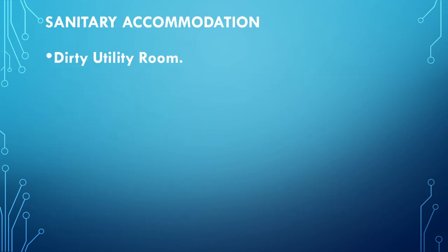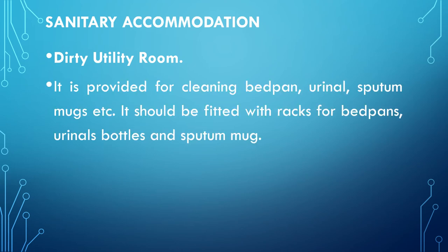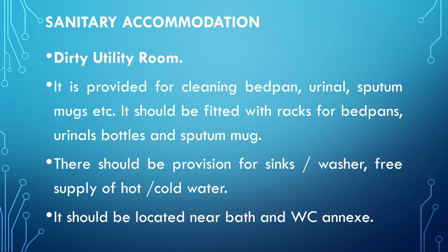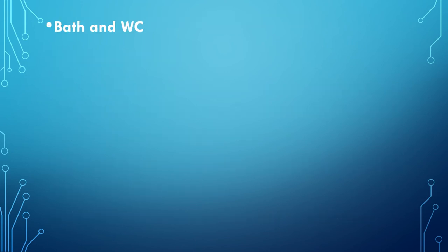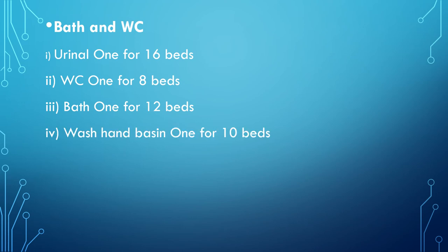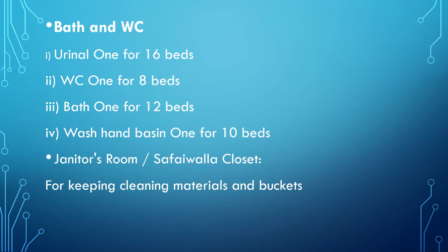In sanitary accommodation: a dirty utility room is provided for cleaning bedpans, urinals, sputum mugs, etc., fitted with racks and provision for a sink with hot and cold water supply, located near the bath and wash counter. Ratios include: one urinal for 16 beds, one wash counter for 8 beds, one bathroom for 12 beds, one hand wash basin for 10 beds, and a janitor's room for cleaning materials and buckets.